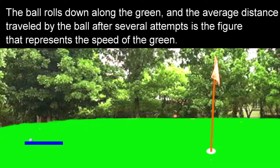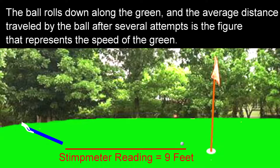The ball rolls down along the green, and the average distance traveled by the ball after several attempts is the figure that represents the speed of the green.